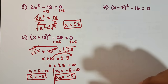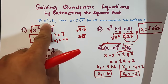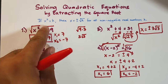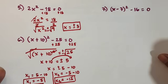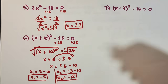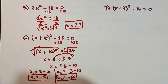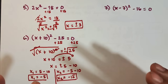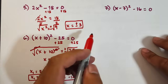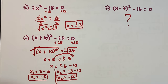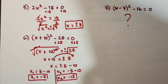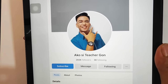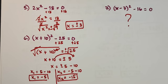To summarize: in extracting the square roots, we manipulate the equation into the form x squared equals k, then extract the square roots. If k is positive, you get two different values of x. If k is zero, you have one value of x. If k is negative, there is no real value of x. Number 7 will serve as your assignment. If you're new to my channel, don't forget to like and subscribe, and follow me on Facebook. Maraming salamat, bye bye!